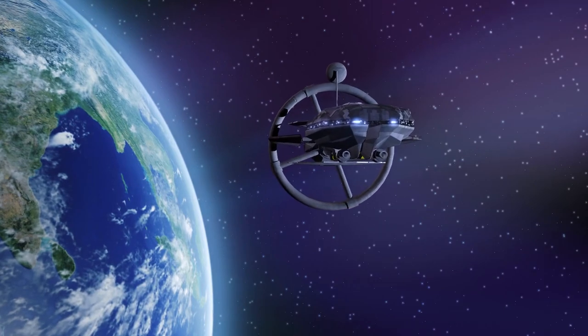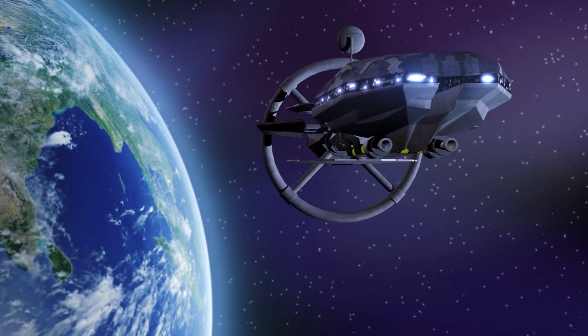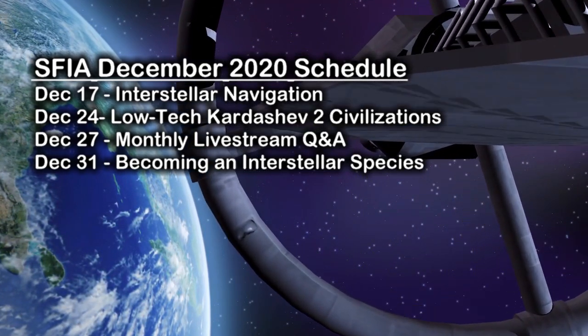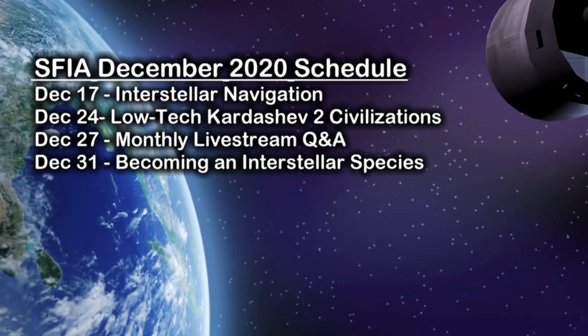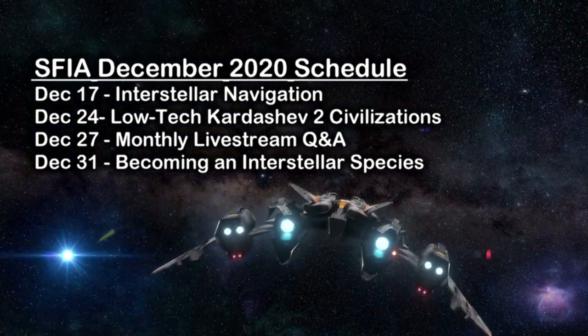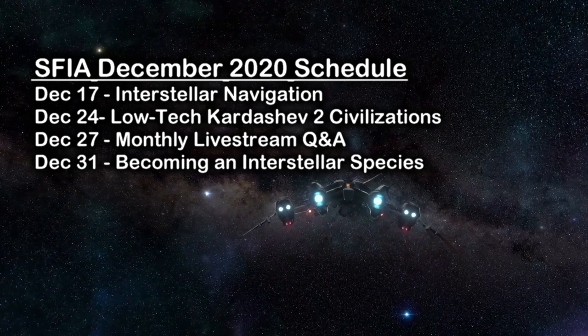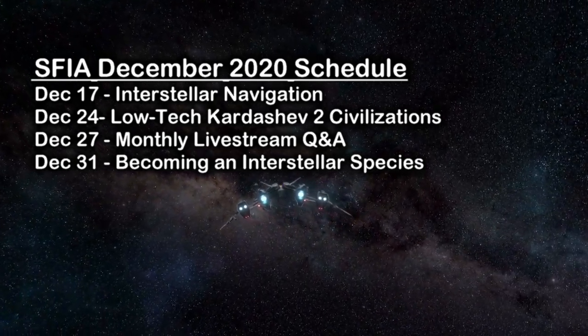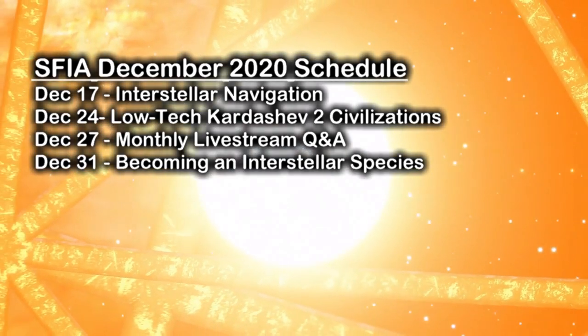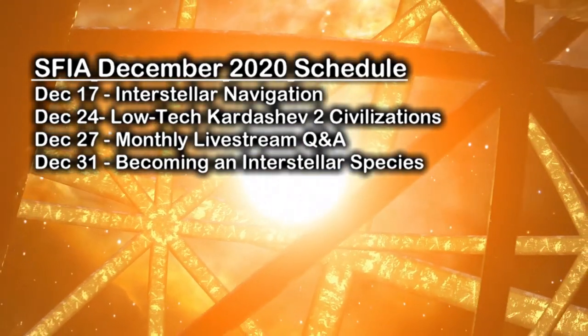So we'll be finishing our series on becoming an interplanetary species, along with finishing the year 2020 with a look at becoming an interstellar species, but before that we'll be looking at how to navigate interstellar space, and also how we might begin the process of going beyond being an interplanetary species in this solar system as we look at low-tech Kardashev-2 civilizations. We also have our monthly livestream Q&A coming up Sunday, December 27th.